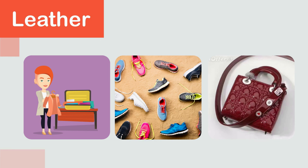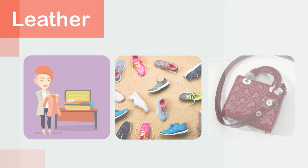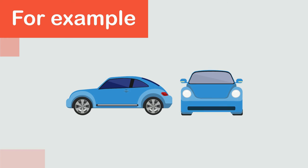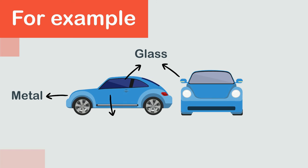We often combine many materials together to form an object. For example, if you look at a car, you will notice that its outer structure is made from metal, the windows and mirrors are made of glass, the interior structures such as door handles, dashboard, and air vents are made of plastic, and the seats are covered with leather.